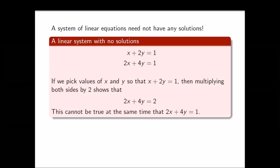The system x plus 2y equals 1 and 2x plus 4y equals 1 has absolutely no solutions. If x plus 2y equals 1, multiplying both sides by 2 gives 2x plus 4y equals 2. So the first equation is equivalent to 2x plus 4y equals 2. If values satisfied both that and 2x plus 4y equals 1, then 1 and 2 would be the same thing — which is obviously false. Therefore, there are no real numbers x and y satisfying both equations simultaneously.